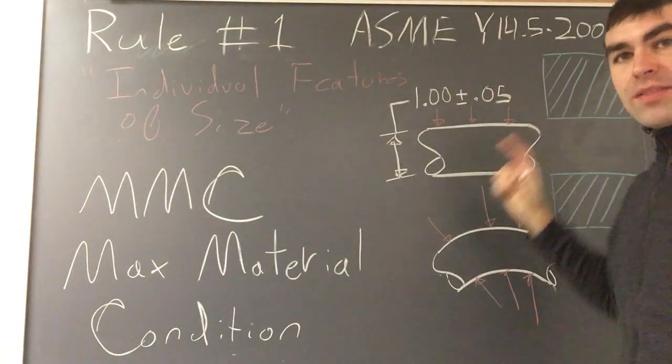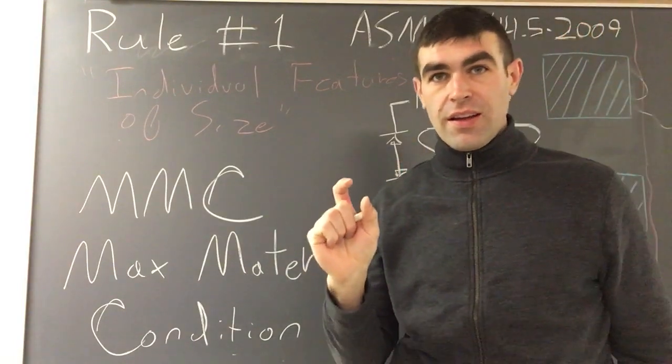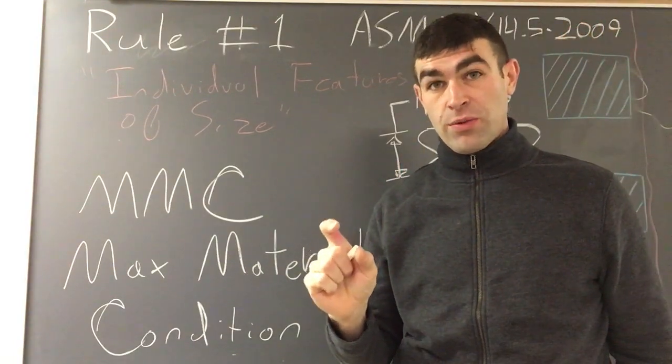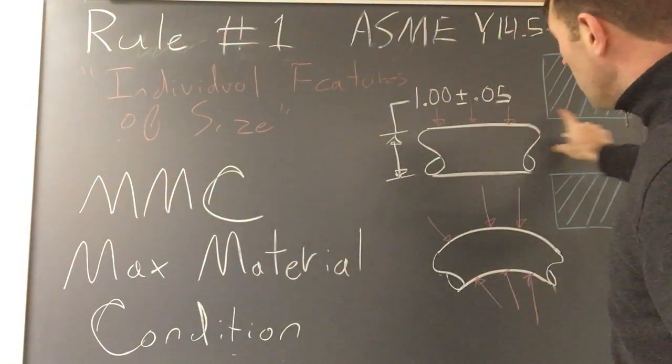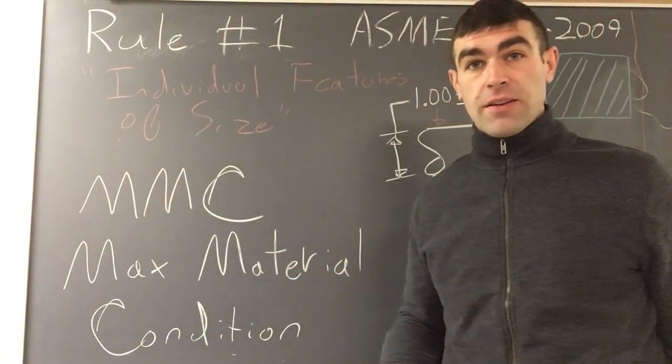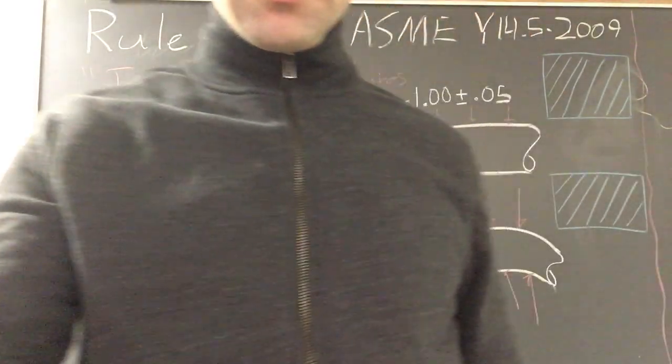So when this mating piece is as small as it can be, as its tolerance for, it must be straight. So when you combine these two parts, they're going to fit.